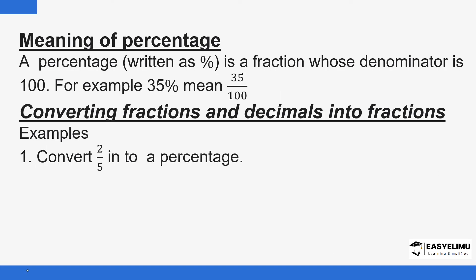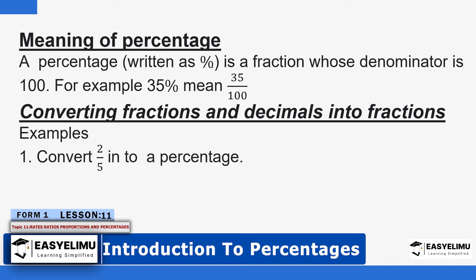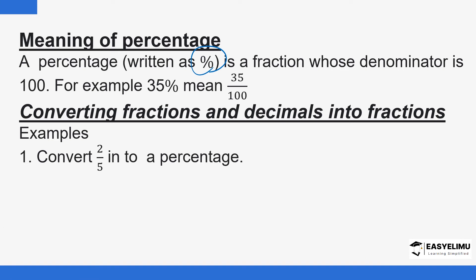What does it mean when you talk about percentage? We want to start with the symbol used for percentage — you can see it here. Every time you see that symbol, it simply means percentage. A percentage is a fraction whose denominator is 100. For example, if you say 35 percent, it simply means 35 has a denominator of 100 — that is, 35 over 100. Take note of that percentage symbol. We want to see how you can convert fractions and decimals into percentages.